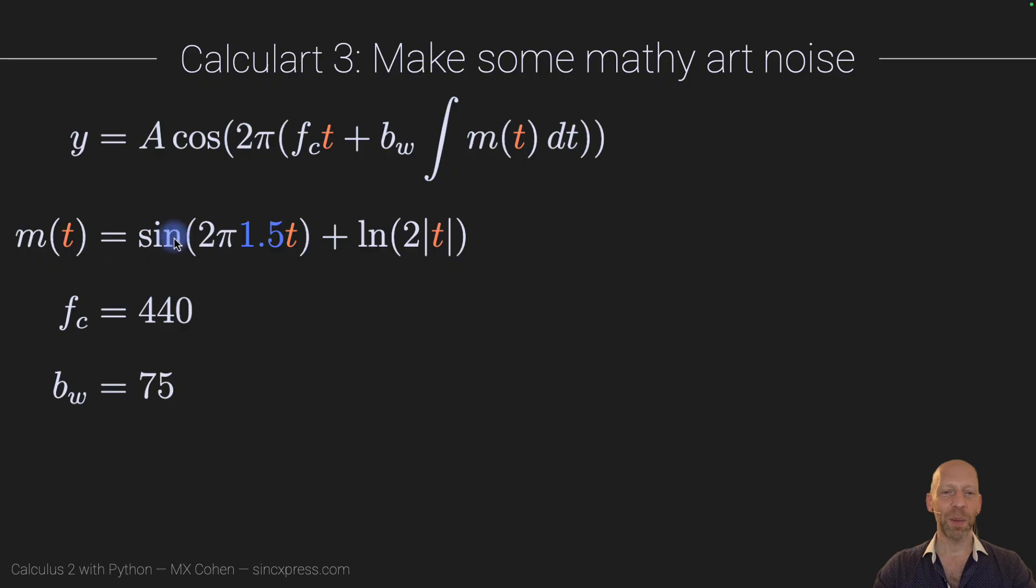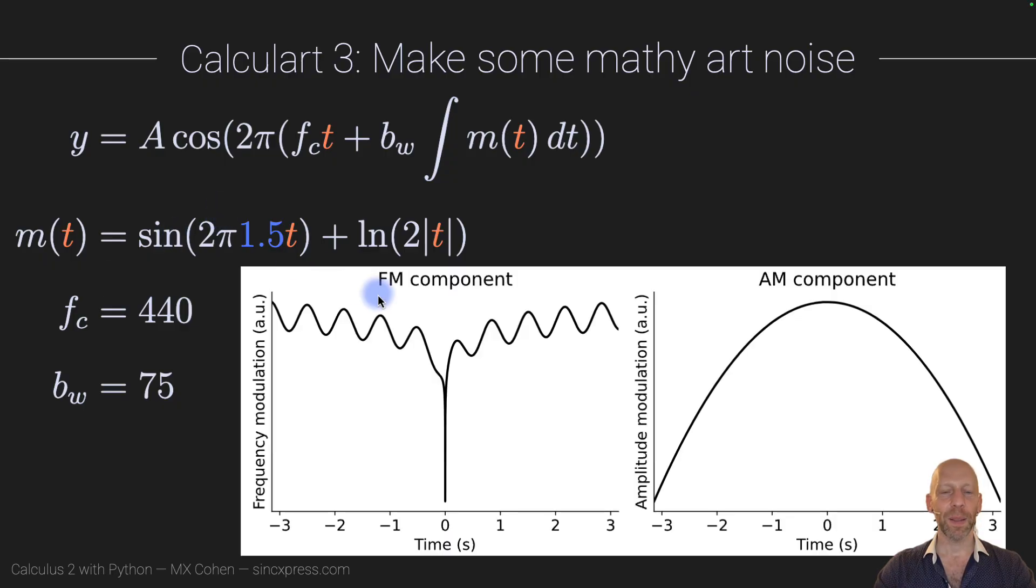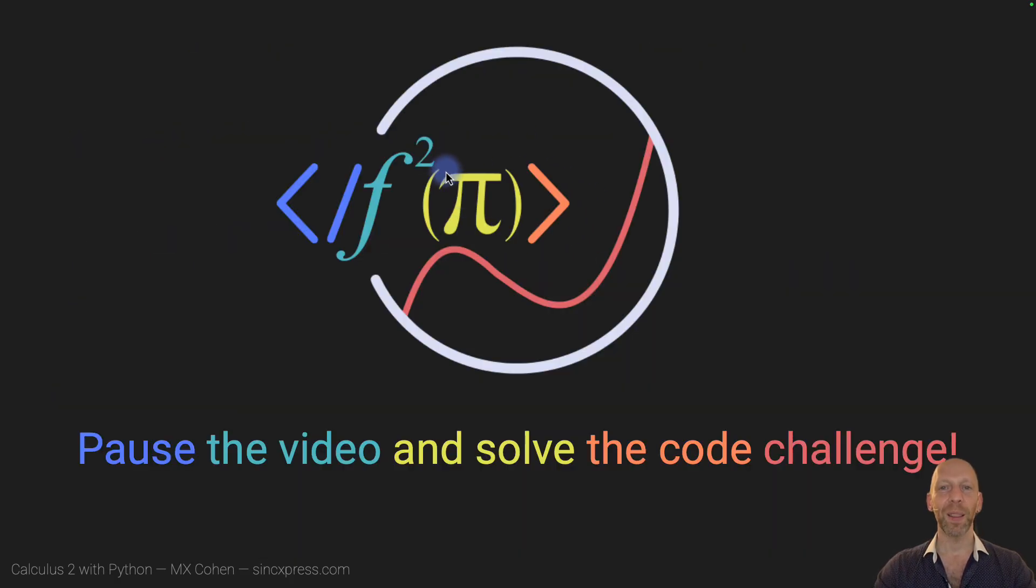So these are just some fun parameters that I played around with. The FM component looks like this. You can see there's also this natural log of T part here, and the AM component, basically, the sound will get louder over time and then quieter over time. So let me show you what that looks like and also what it sounds like.